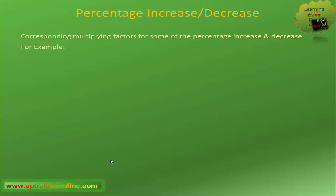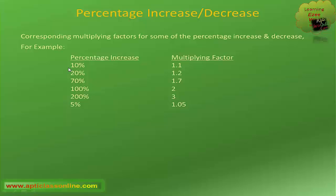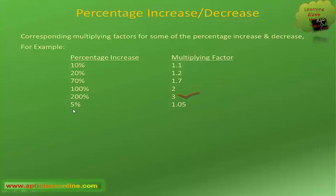For 10 percent increase, the multiplying factor is 1.1. For 20 percent, it is 1.2. For 70 percent, it is 1.7. For 100 percent, it will become 1 plus 1, that means 2. For 200 percent, it is 3. For 5 percent, it will be 1 plus 5 divided by 100, that is 1.05. We can get similar multiplying factors for every percentage increase or decrease.